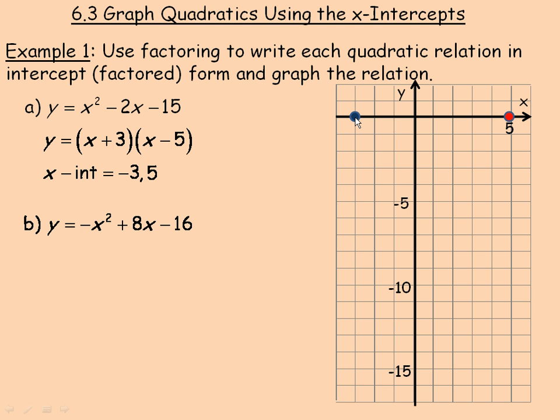There's a distance of 8 between negative 3 and 5. So if 8 is the distance between them right in the middle, 4 to the left of this one or 4 to the right of this one at positive 1, that's where the axis of symmetry would be.